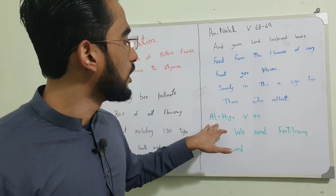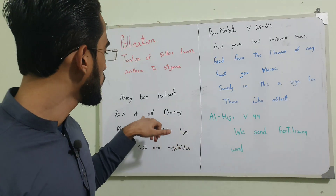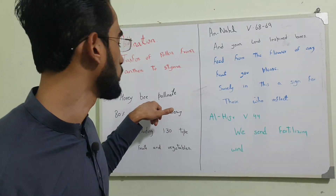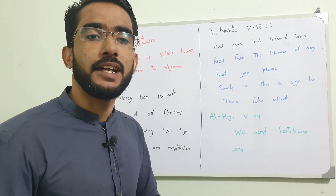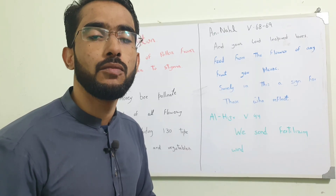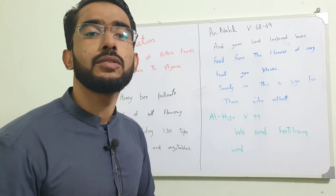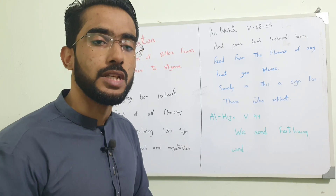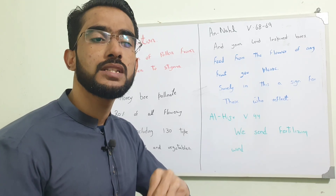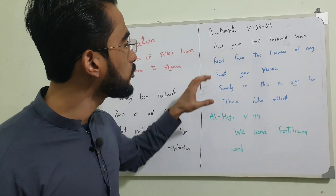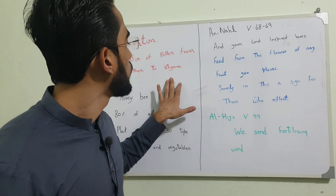In the next verse, Allah says in Surah Al-Hajr, verse number 44: 'We send fertilizing winds.' 80% of pollination of flowering plants occurs through honey bees, but there are two types of pollination: self-pollination and cross-pollination. The remaining 20% usually occurs by wind. There are plants where the anther and stigma are on the same plant, or could be on different plants of the same species. When there is wind, it carries the pollen from anther to stigma. It is scientific proof that these two verses talk about the pollination of flowering plants.